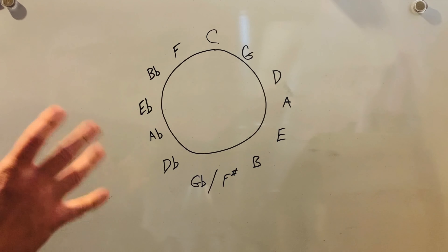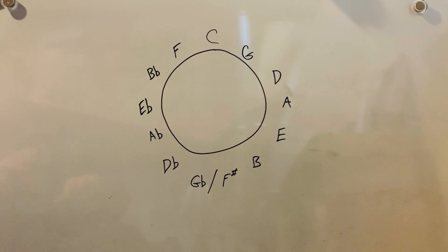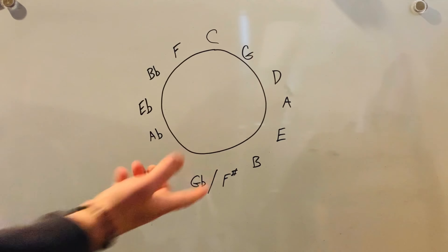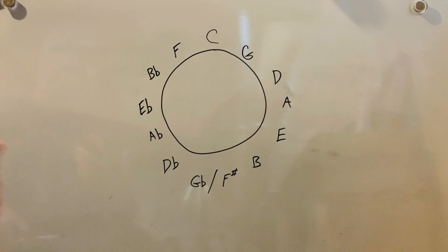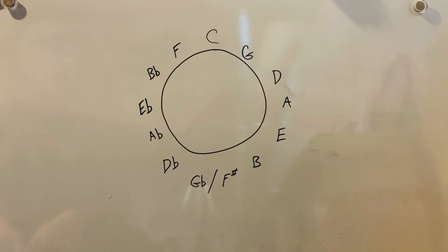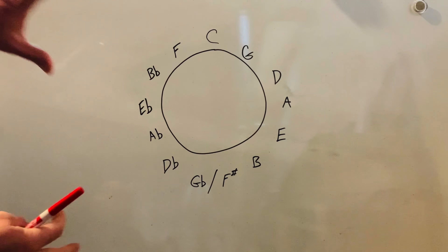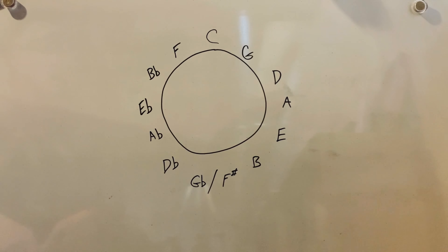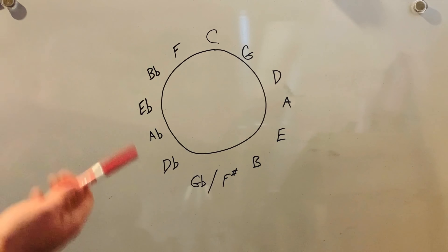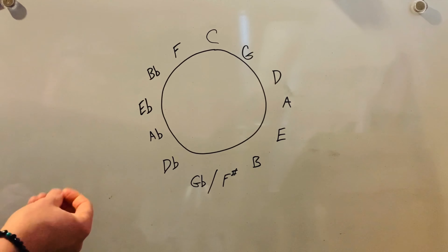Now that we're at the whiteboard, we're going to talk about the Circle of Fifths. What we have here is a circle with notes around it. A basic understanding of how scales are built comes in handy, but it's not necessarily required. If you print one of these off, it'll have a lot more on it. You don't have to build these yourself — you can look them up and print them off. I'm going to explain what the Circle of Fifths is, how you can use it, some tips and tricks for writing songs, and how it works.